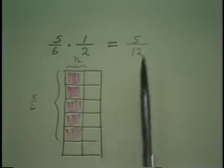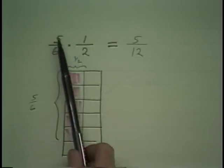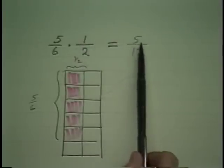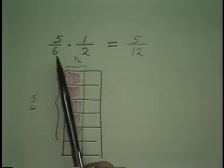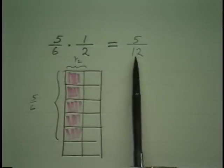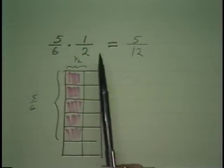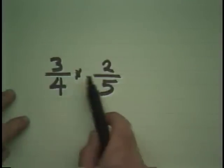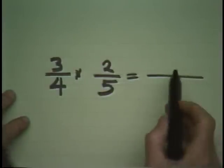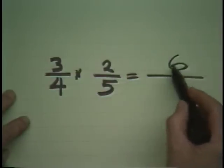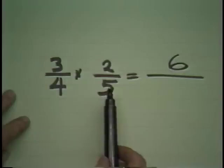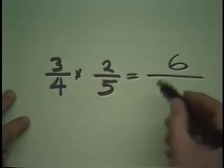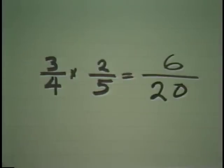Now notice this though. I could have got the same number by simply taking that numerator times that numerator, and that gave me my answer numerator. And this denominator times this denominator to get my answer's denominator. As some of you might recall it, top times top to get top, bottom times bottom to get bottom. And indeed that is the case for multiplication of fractions. Just that simple. So to multiply fractions, to get the numerator of the answer, you multiply the numerators of the factors. To get the denominator of the answer, you multiply the denominator of the factors.